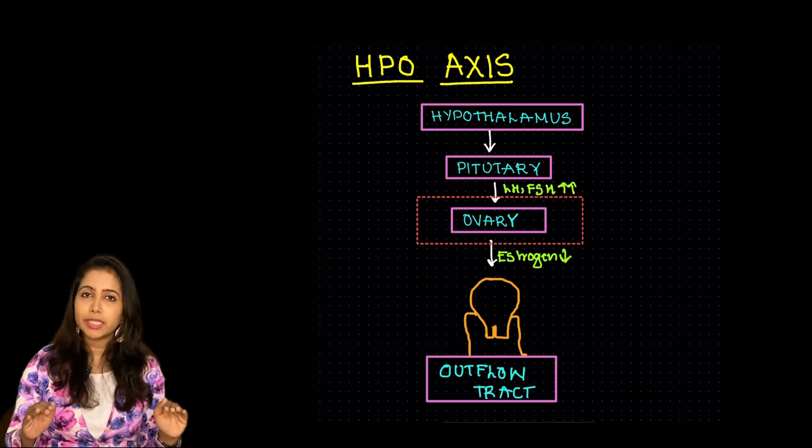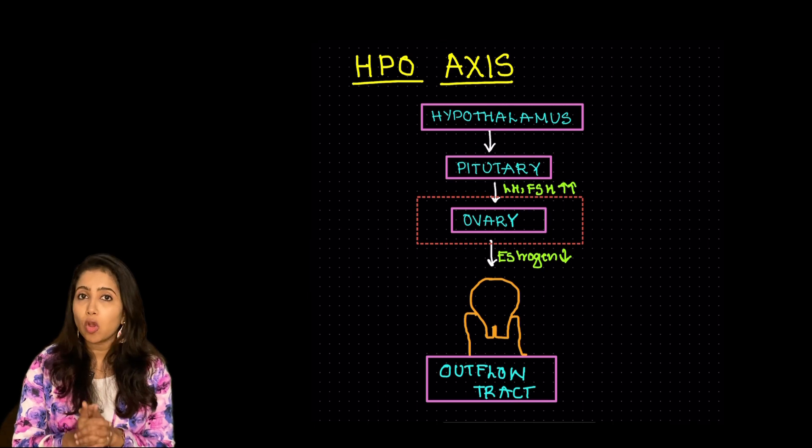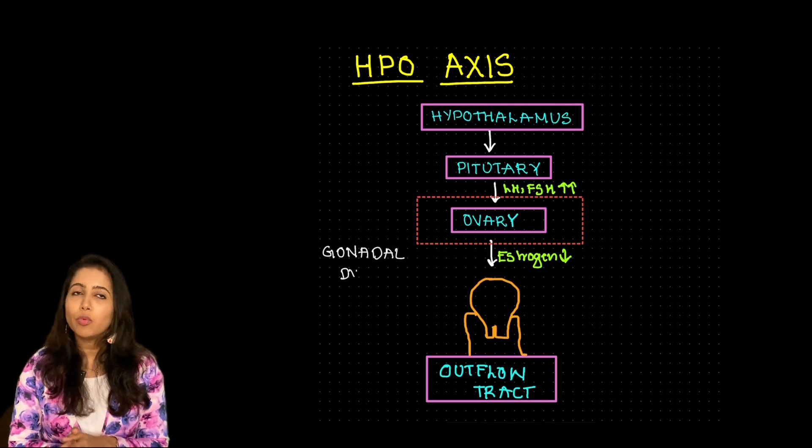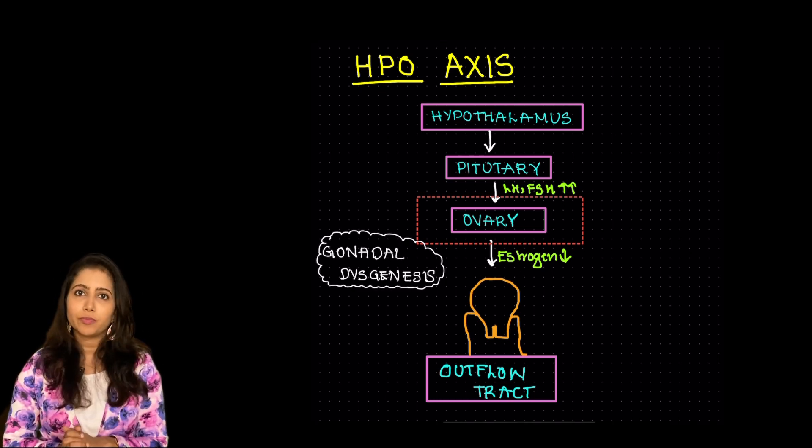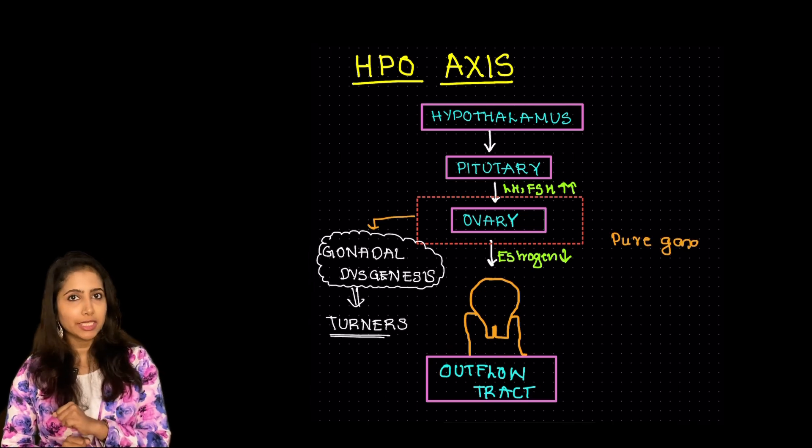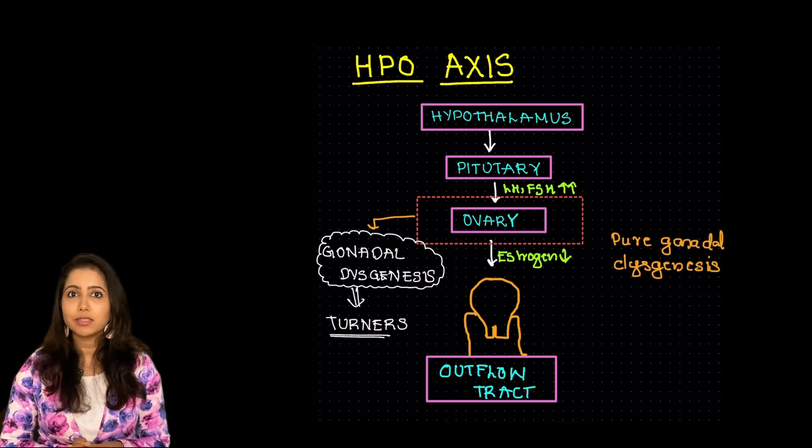So what are the causes at the level of ovaries? The most common cause is due to a dysgenetic gonad which is most commonly associated with Turner's syndrome. Another entity is the pure gonadal dysgenesis that is seen in Swyer's syndrome.